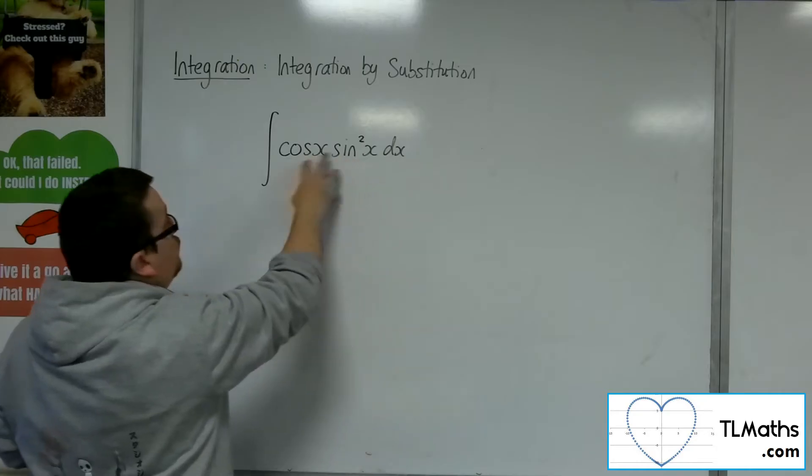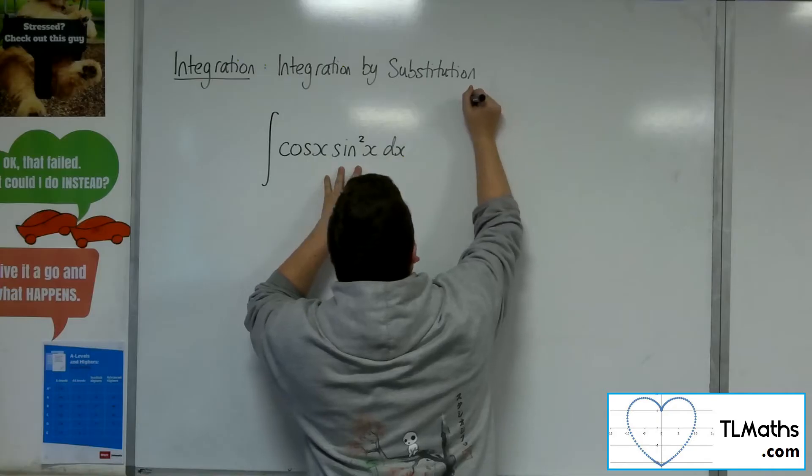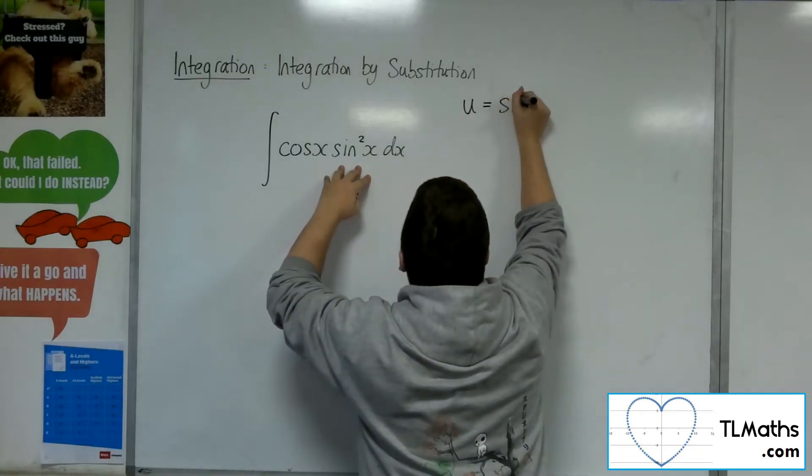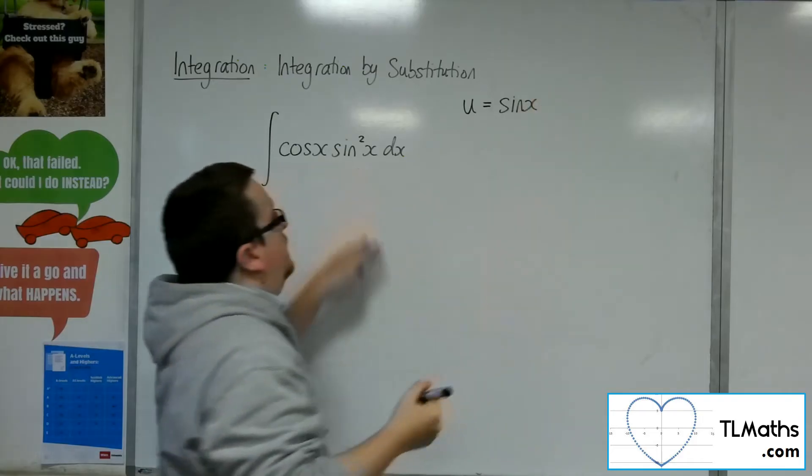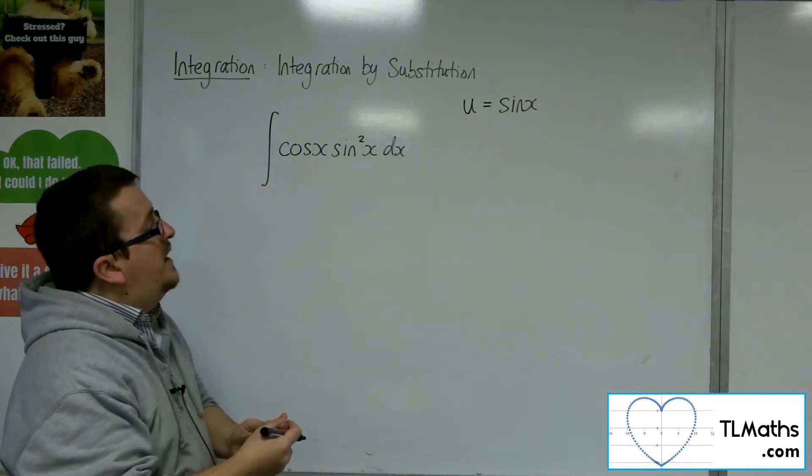And we've got the derivative of sine x on the outside. So when dealing with this, we would use the substitution to be the sine x, in much the same way as we would with the other examples.